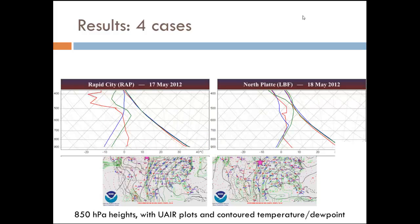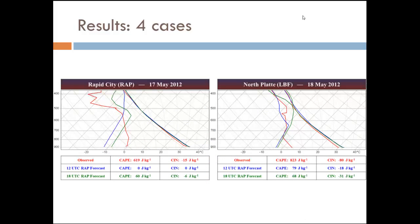Looking at soundings, we start to see a little more. For the Rapid City case from the 17th and the North Platte case from the 18th, the observed sounding is red, the 12Z forecast valid at 0Z is blue, and the 18Z forecast is green. You can start to see the temperature profile looks actually pretty good. But the moisture is where we're starting to really have some problems. Even a small, very low-level error in moisture really throws off your overall CAPE and CIN values.